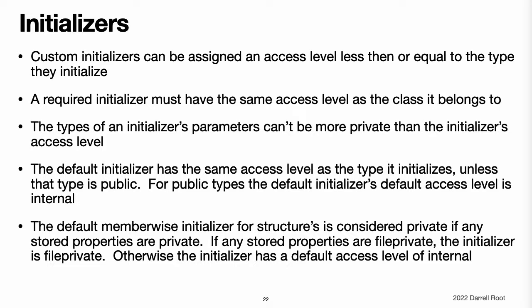Initializers. Custom initializers can be assigned an access level less than or equal to the type that they initialize. The only exception is for required initializers. A required initializer must have the same access level as the class it belongs to. As with function and method parameters, the types of an initializer's parameters cannot be more private than the initializer's own access level. Default initializers. Swift automatically provides a default initializer without any arguments for any structure or base class that provides default values for all of its properties and does not provide at least one initializer itself. A default initializer has the same access level as the type it initializes unless that type is defined as public. For a type that is defined as public, the default initializer is considered internal. If you want a public type to be initializable with a no-argument initializer when used in another module, you must explicitly provide a public no-argument initializer yourself as part of the type's definition.